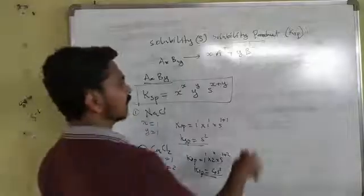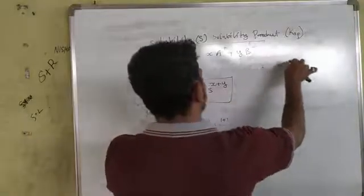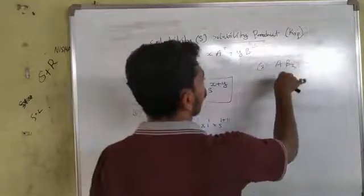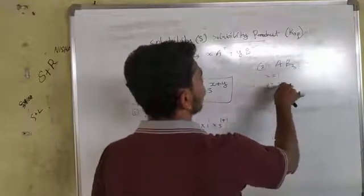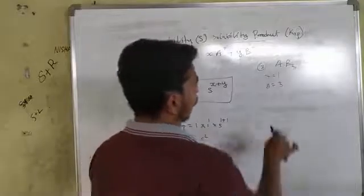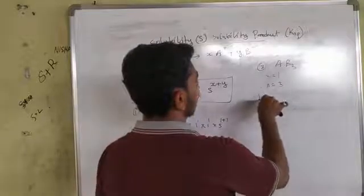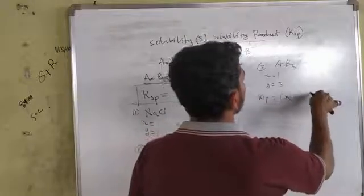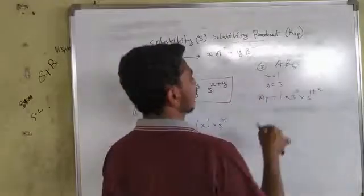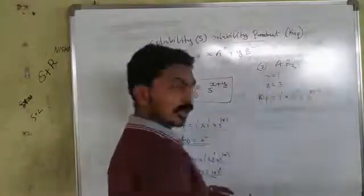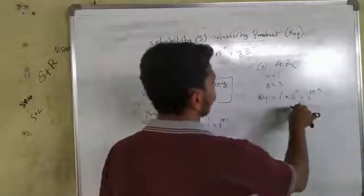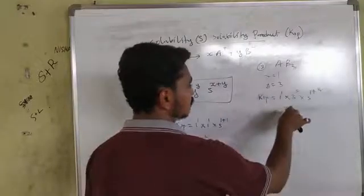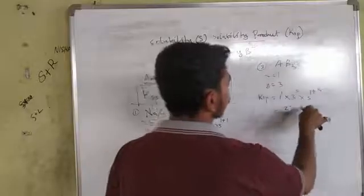Example 3: Compound AB₃. Here x = 1 and y = 3. Applying the formula: Ksp = 1^1 × 3^3 × S^(1+3) = 1 × 27 × S⁴ = 27S⁴. Note that 3 raised to 3 equals 27, not 9. So for AB₃, Ksp equals 27S to the power 4.